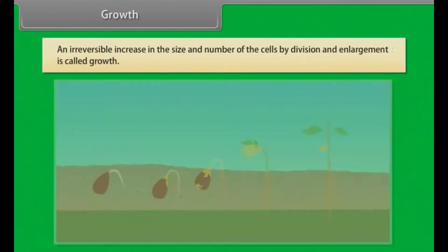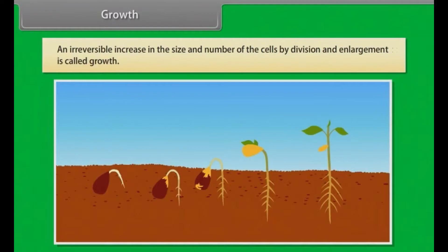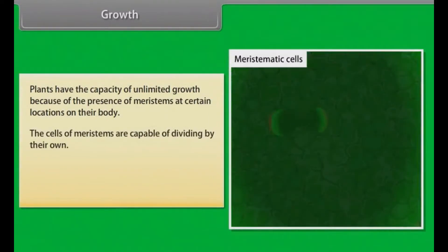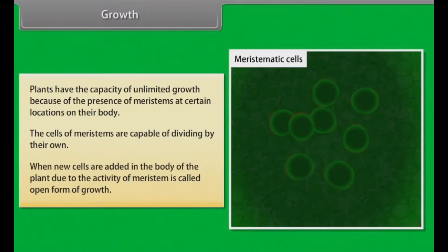An irreversible increase in the size and number of cells by division and enlargement is called growth. In plants, the growth generally is indeterminate. Plants have the capacity of unlimited growth because of the presence of meristems at certain locations on their body. The cells of meristems are capable of dividing by their own. When new cells are added in the body of the plant due to the activity of meristem, it is called open form of growth.